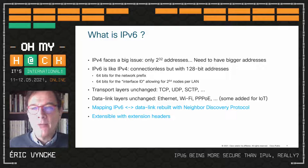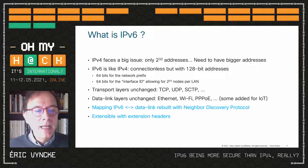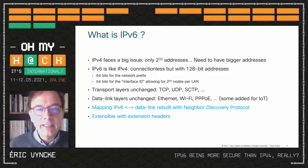IPv6 is pretty much like IPv4 — it's a connectionless IP layer — but with 128-bit addresses. Those 128 bits are split in two: 64 bits for what we call the network prefix or subnet, identifying a unique VLAN or LAN, and 64 bits for the interface ID — basically the host — allowing 2 to the power of 64 nodes per LAN, which is a huge amount.